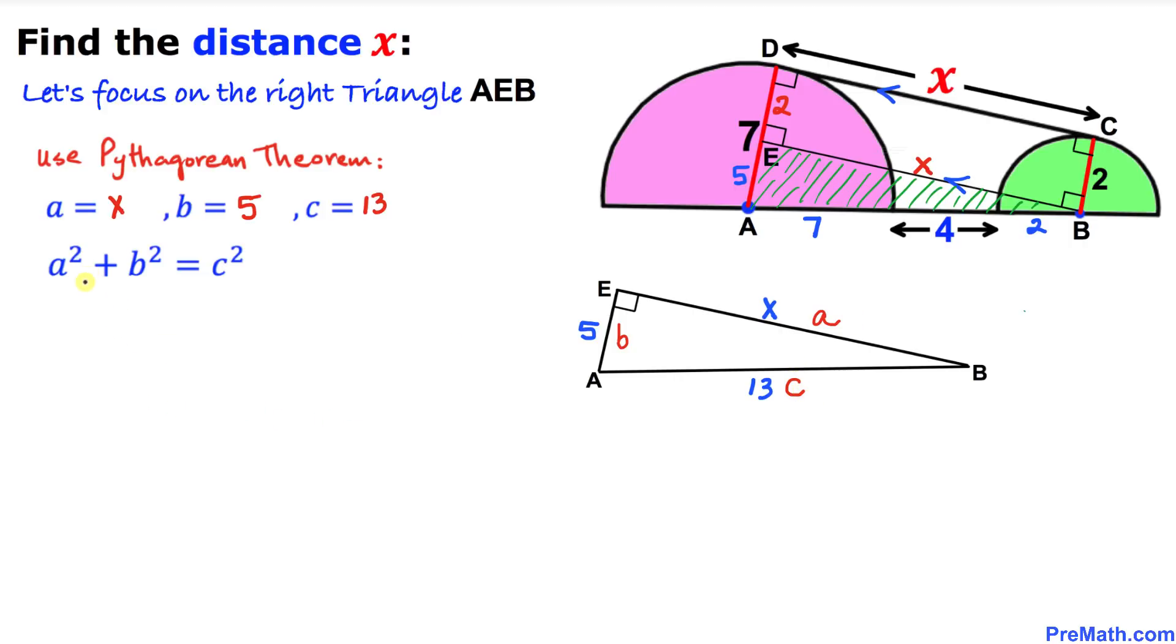And here is our Pythagorean formula: a squared plus b squared equal to c squared. Let's fill in the blanks. We know our a value is x, so this is going to become x squared plus b is 5 squared, then equal to c is 13 squared.